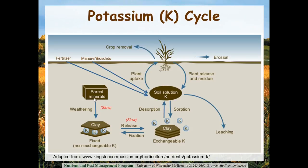This is the potassium cycle. We will look at inputs of potassium to the soil and exports from the soil. By far, the most important input is the parent material of the soil — minerals and bedrocks that, as they weather, release potassium and other nutrients. Fertilizer is also an input, as are manure and biosolids — all important inputs to potassium in the soil profile.